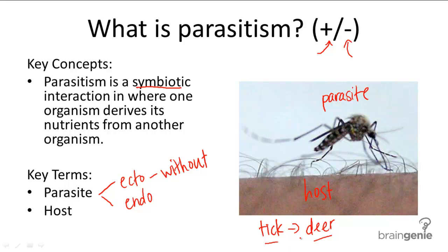Mosquitoes and ticks are both ectoparasites, and when they feed on another organism's blood for nutrition they can cause significant harm. For example, a tick that lives on a deer will weaken the deer by continuously drawing on its blood. Ticks and mosquitoes can also pass around harmful diseases such as malaria and Lyme disease.